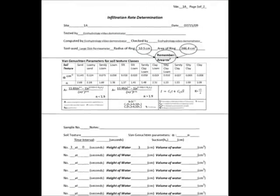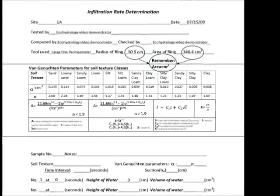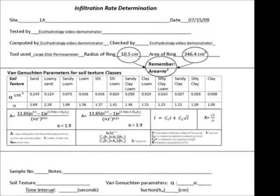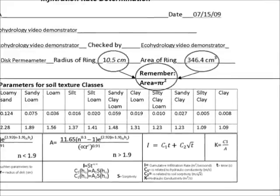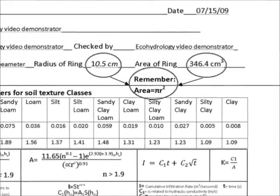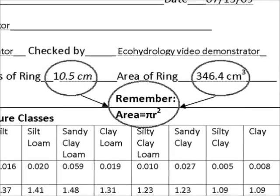Ensure the datasheet has been properly labeled with the radius of the ring and the area of the ring. Remember, area measurements are calculated through pi r squared. The datasheets are available on the Eco-Hydrology webpage through WebCT.